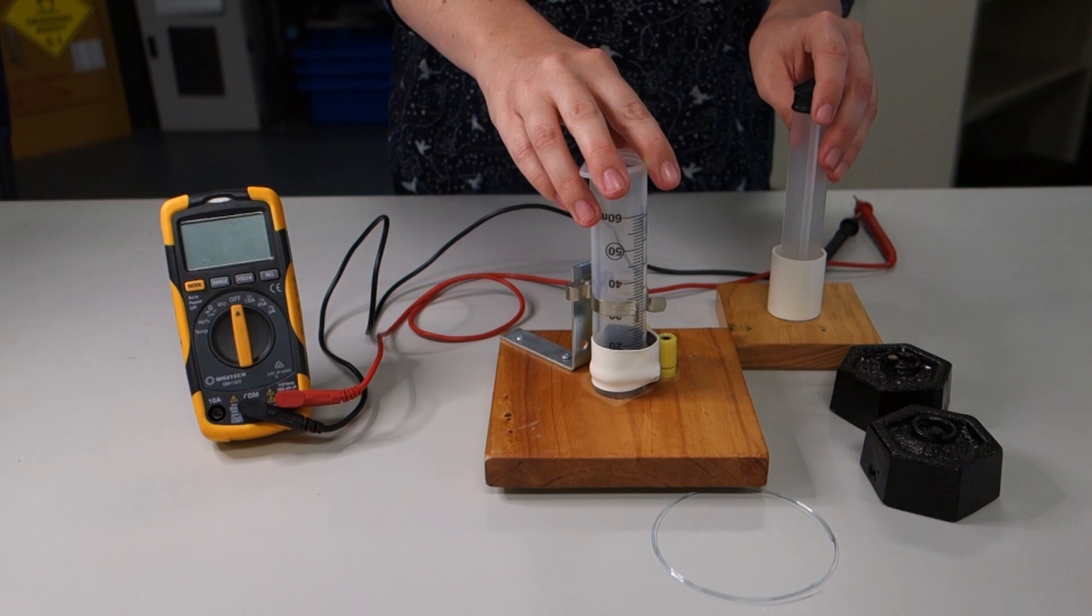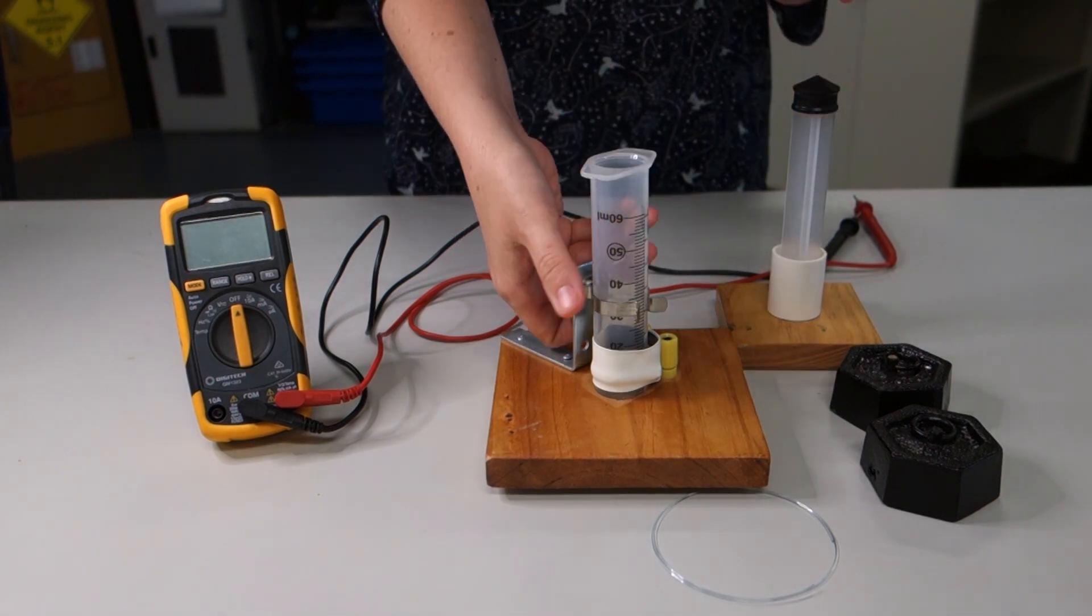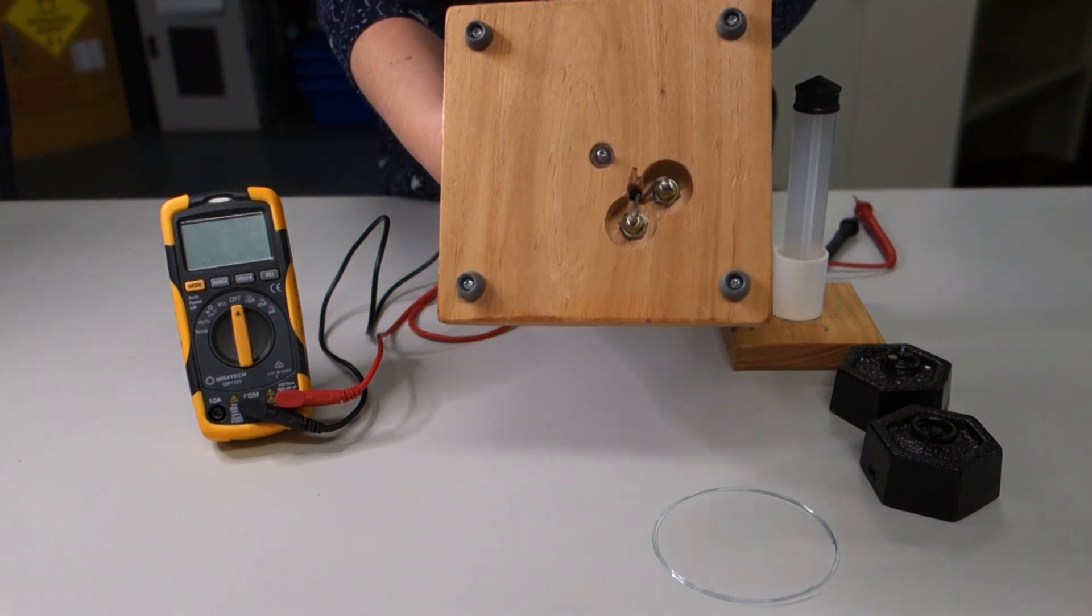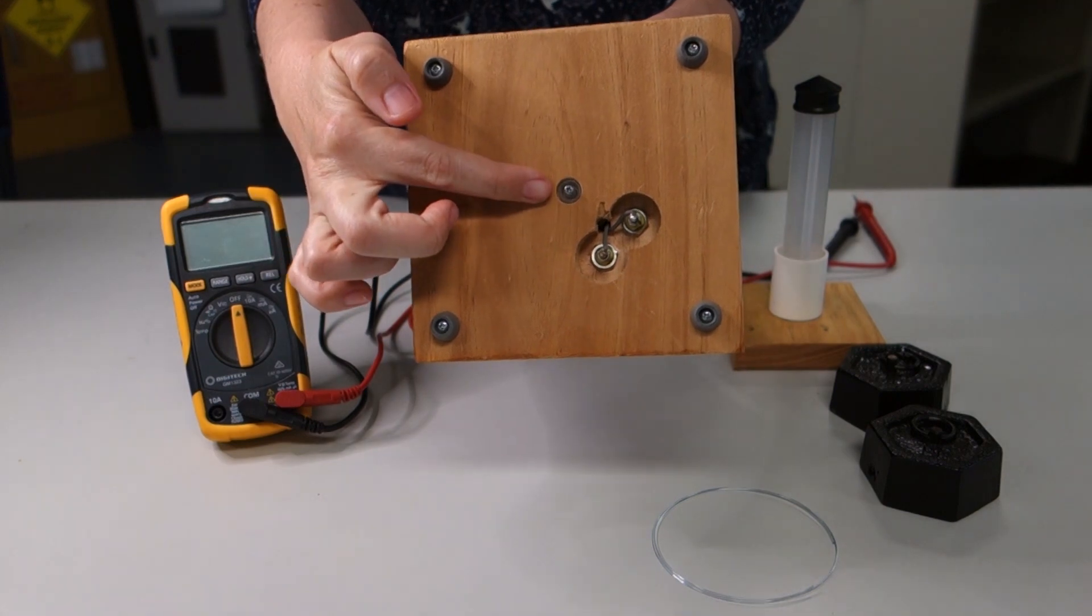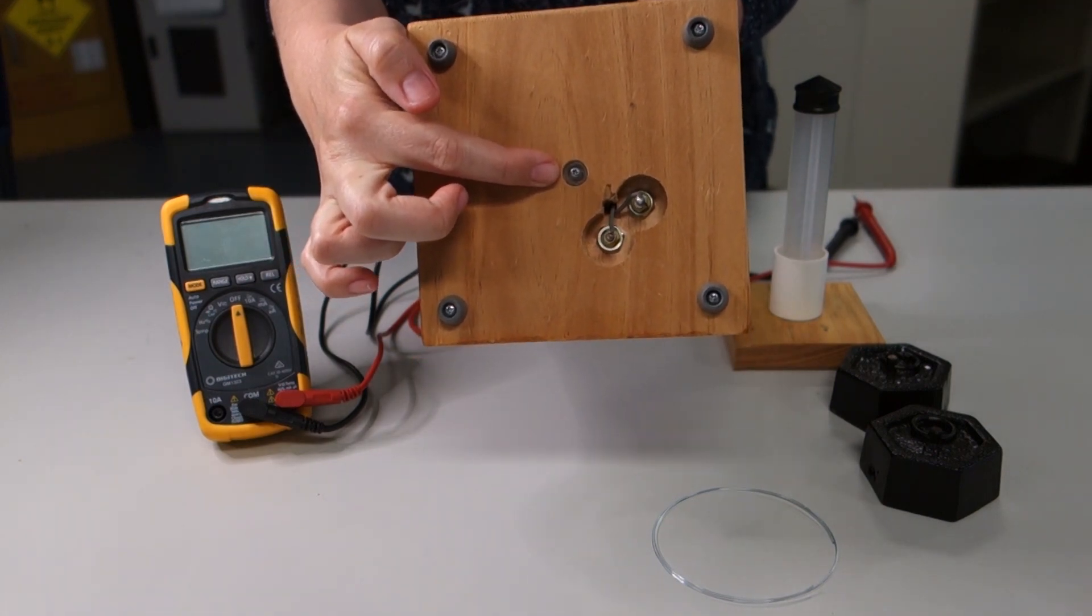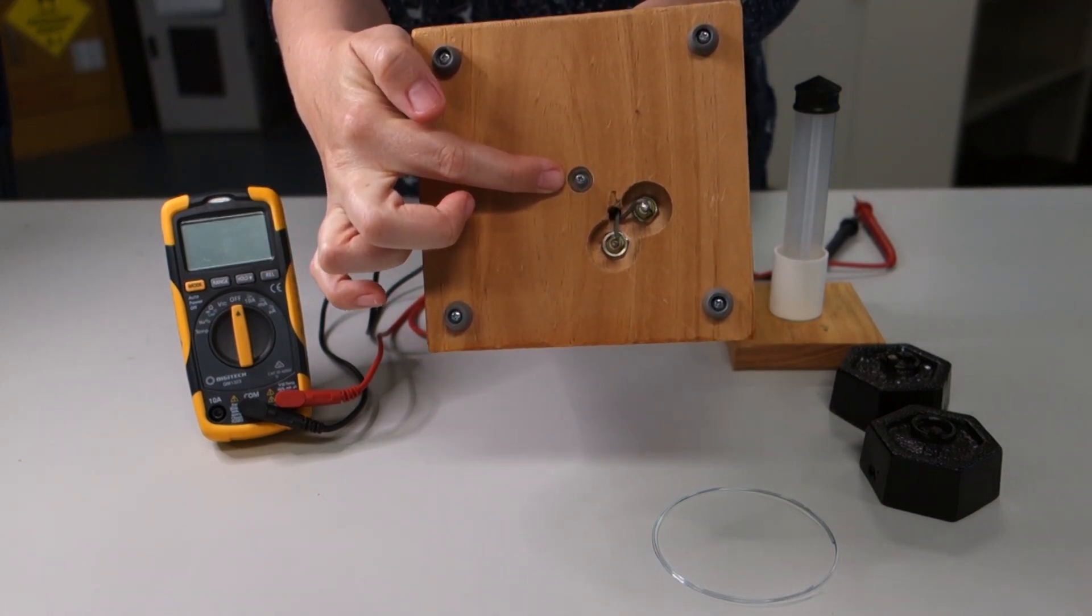To do this, we will use a PVT syringe. You can see that this end of the syringe has been sealed by a small screw. Ensure that this seal is tight and no gas can escape.